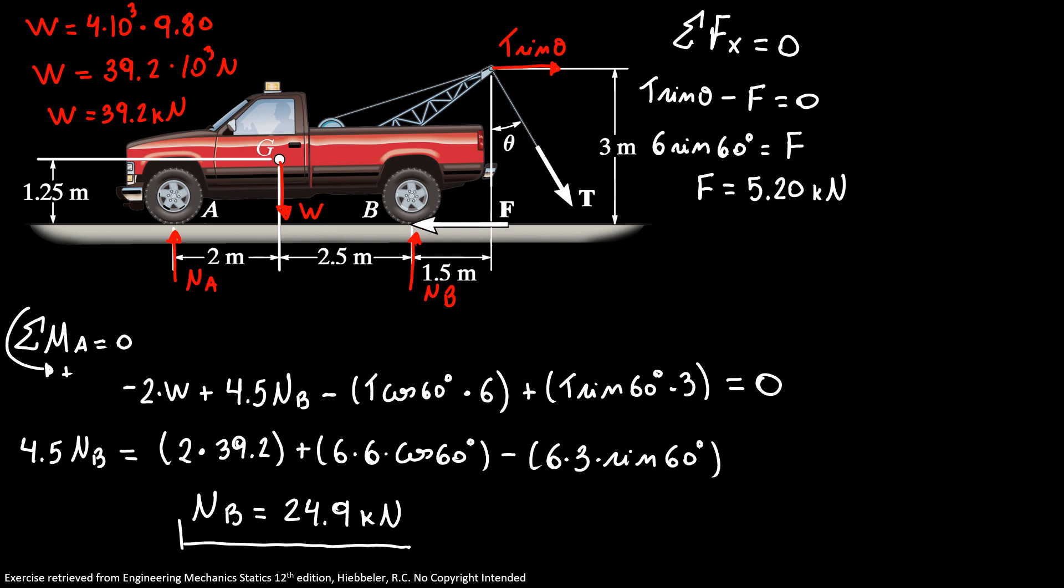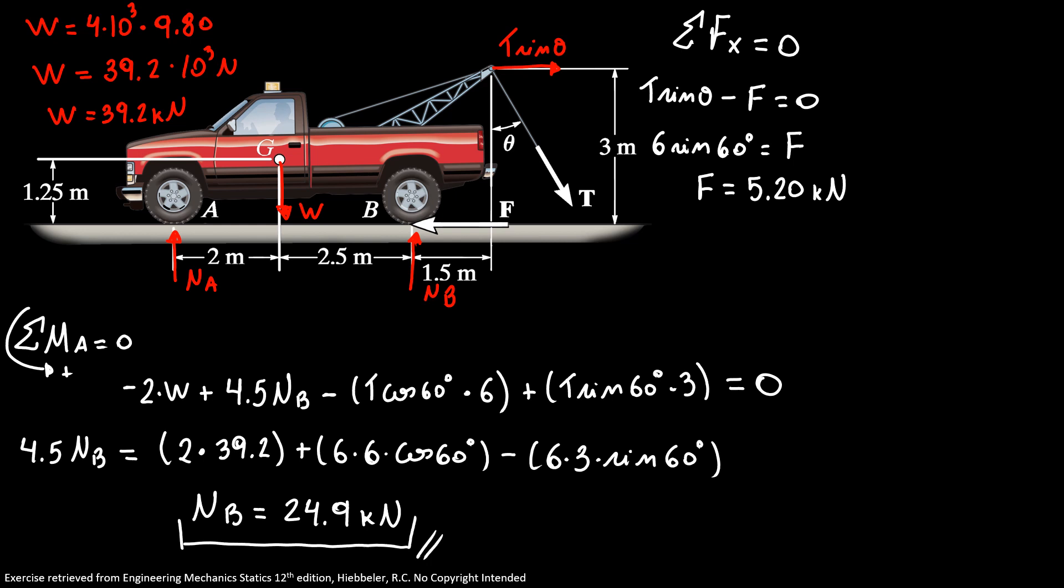So this is our second answer for our problem. Now, to finalize our exercise, I'm going to do the sum of forces in y direction equals 0. So here I have normal A that I don't know, normal B that I just found, our weight that's centered in G, and don't forget our tension cosine of theta.